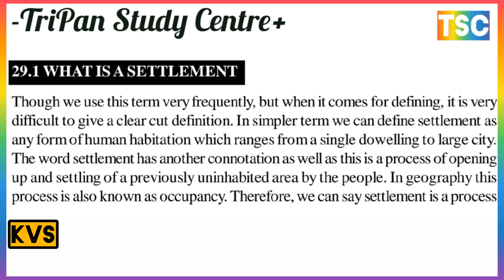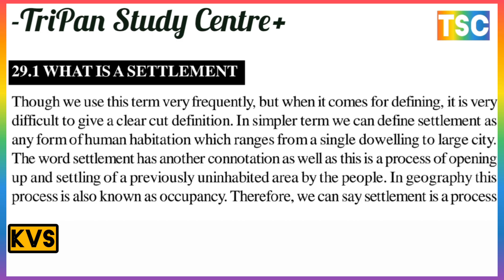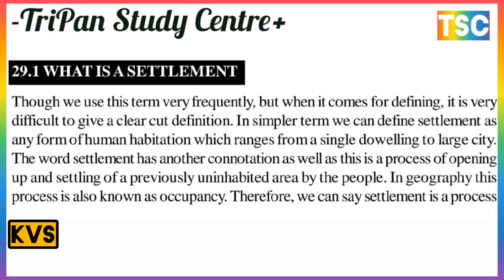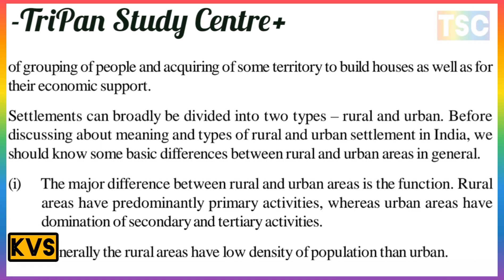First of all, let us understand what is a settlement. Settlement is the most important point. We use this term very frequently, but when it comes to identifying it, it is very difficult to give a clear-cut definition. We can define settlement as any form of human habitation which ranges from a single dwelling to a large city. The word settlement has another connotation as well — it is a process of opening up and settling a previously untreated area by people. Geographically, settlement is a process of grouping of people and acquiring some territory to build houses as well as for their economic support. Settlement can be broadly divided into two types: rural settlement and urban settlement.